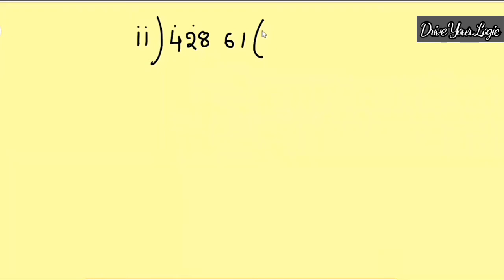Now you have to understand: with what number do I multiply? No need to write the full table — just see the last digit of the divisor and the last digit of the dividend portion. The last digit here is 4 and the divisor ends in 1, so think: what times 1 gives something near 4? Try 4: 4 into 1 gives 44, which is near. But check — since 44 is too close, try 3: 3 into 11 is 33. So you take 3. Subtract 33 from the digits, and your answer is 9.